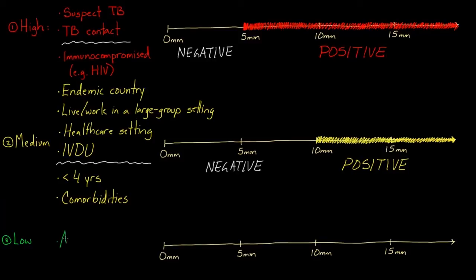So down here, we have anyone else. Anyone that doesn't fit into the other categories fits into this final one. So this is the low risk category. And for these folks, 15 millimeters or greater are needed to be considered positive.